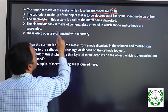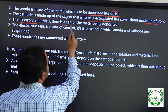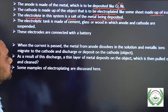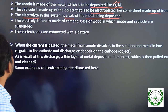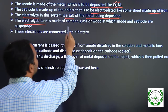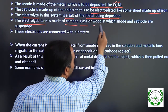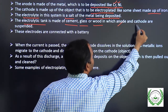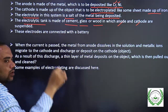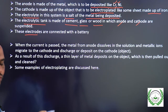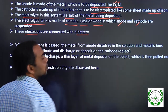The electrolyte in the system is a salt of the metal being deposited, so ions are separating from it. The electrolytic tank is made up of cement, glass, or wood. Two electrodes — anode and cathode — are suspended in the cell. To undergo the electrolysis process we need energy, that is electricity, and the source is a battery. The electrodes are connected to the battery.